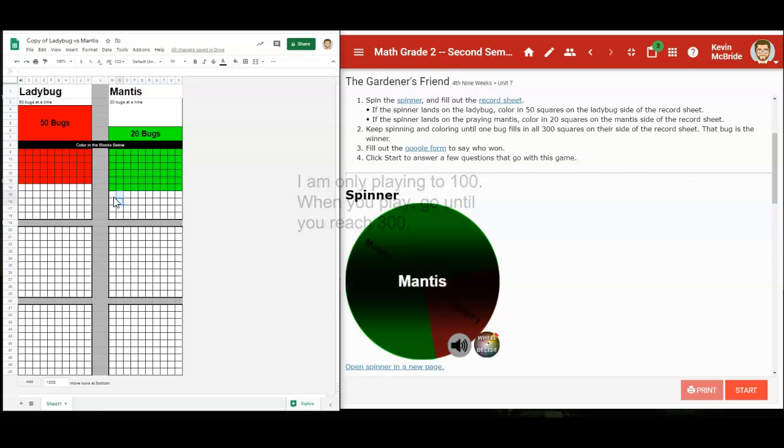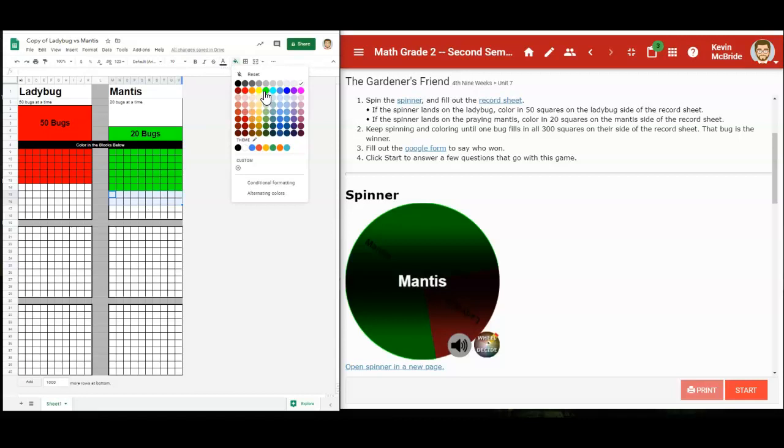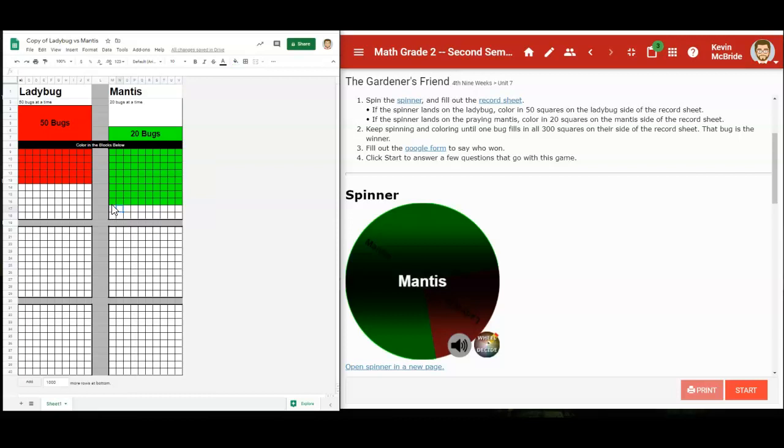I'm just going to play to 100 for right now. You will play until you get to 300. We've come to a point where I only need one more spin for the mantis to win and one more spin for the ladybug to win. Let's see who's going to win first to 100 here.